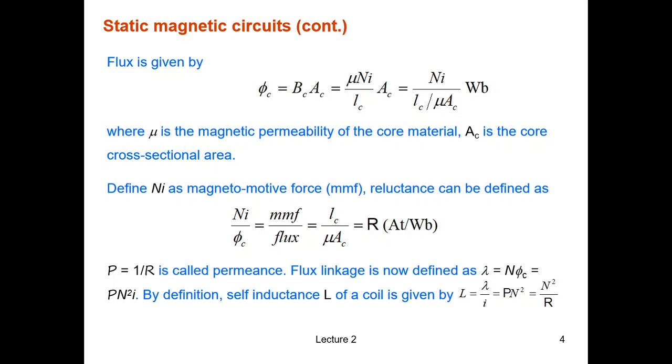We define Ni as the magnetomotive force MMF, and we can also define reluctance as the ratio between MMF and the flux. So MMF divided by flux will give us R. The inverse P equals 1 over R is called the permeance. There are many definitions in this lecture.